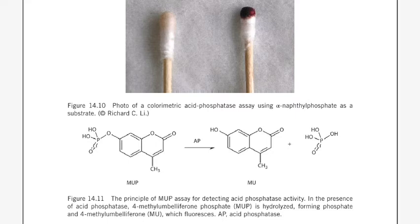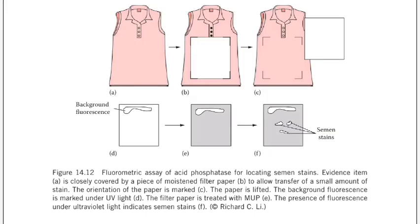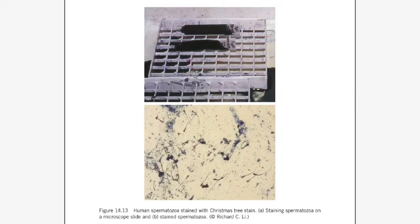One can also go for gel electrophoresis. There is also an important method known as the fluorometric method, which is very sensitive and used for semen mapping. In this method, a wet filter paper is pressed onto a cloth with a semen stain to transfer the sample, then examined in a dark room and sprayed with MUP reagent — methylumbelliferyl phosphate. If a semen stain is present, it will give fluorescence.